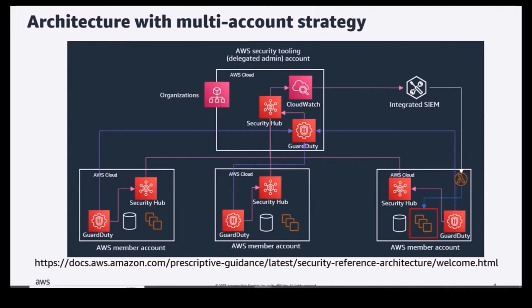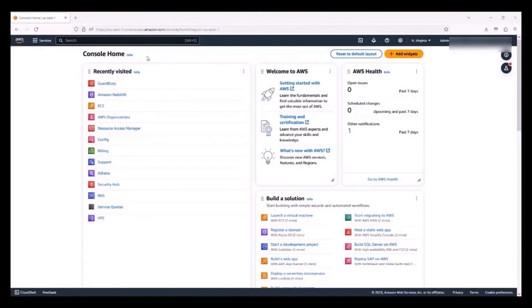This recommendation, along with other security best practices, can be found in the security reference architecture under AWS prescriptive guidance. Now let's look at how we can enable GuardDuty to use a delegated administrator account. The first step is to log into the AWS organization's management account, also known as the AWS payer or billing account.